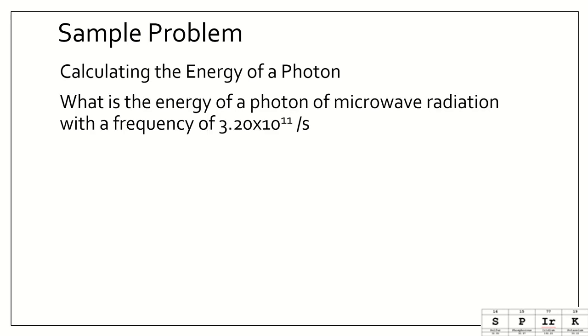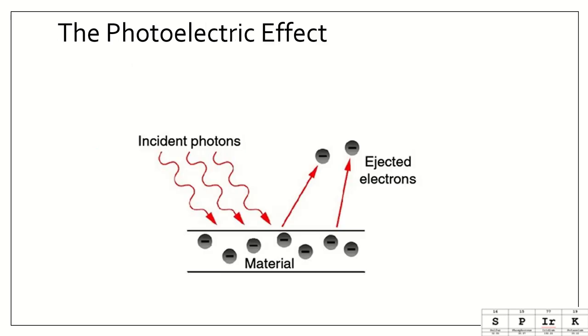Let's do a sample problem here. What is the energy of a photon of microwave radiation with a frequency of 3.2 times 10 to the 11 per seconds, or hertz? We have E equals H nu, so let's plug in Planck's constant, 6.626 times 10 to the negative 34 joules times seconds. Multiply that by our frequency, 3.20 times 10 to the 11th per seconds.